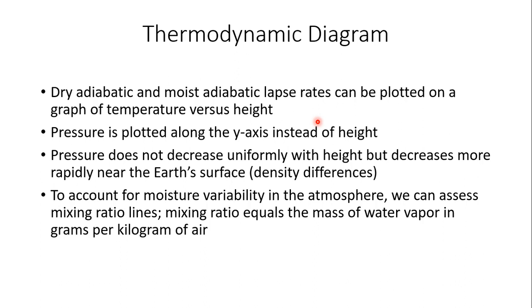Pressure is generally plotted along the y-axis — that vertical axis — in millibars instead of heights. As you go up in the atmosphere, pressure does not decrease uniformly with height; it decreases more rapidly near the Earth's surface because of major density differences. On a hot summer day, the lower layer of the atmosphere next to the ground is heated and very buoyant, less dense. As soon as you go higher up — say 850 millibars or 5,000 feet above the ground — that density of the atmosphere is going to be much different.